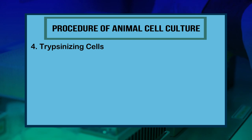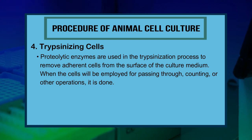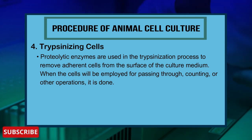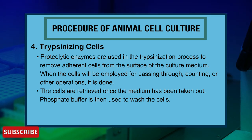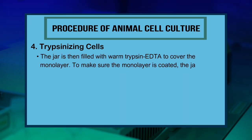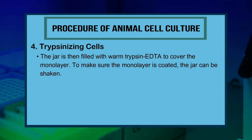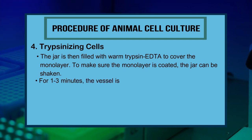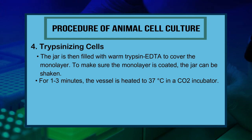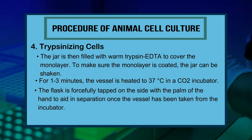For trypsinizing cells, proteolytic enzymes are used to remove adherent cells from the surface of the culture medium, done when cells will be used for passaging, counting, or other operations. The media is removed and cells are retrieved, then washed with phosphate buffer. The jar is filled with warm trypsin-EDTA to cover the monolayer and can be shaken to ensure coating. The vessel is heated to 37°C in a CO₂ incubator for one to three minutes, then the flask is forcefully tapped on the side to aid separation.